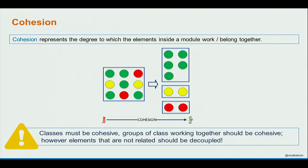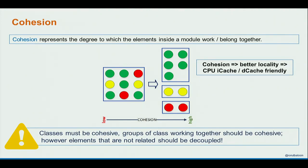Starting with design principles: first is cohesion. Cohesion refers to the degree to which modules or elements that work together should be bundled together — the green ones together, the yellow ones together, the red ones together. Cohesion is important because bundling elements with a high degree of interaction is also CPU-friendly: they have better locality. If they are sparse in main memory you pay the cost of CPU stalls. Being compact is good from the cache perspective, so measure cohesion in your project and refactor to bundle things that work together.